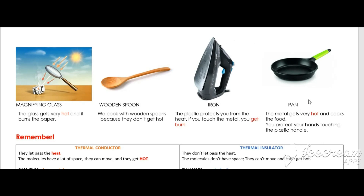Another example is a pan. The metal gets very hot because it's a thermal conductor. Metal is a thermal conductor and glass is also a thermal conductor. You can cook the food here because it gets very hot. But you protect your hand with the plastic handle, because the metal is very hot and plastic is a thermal insulator.